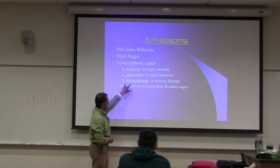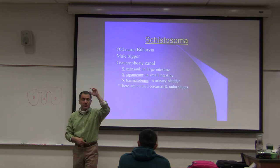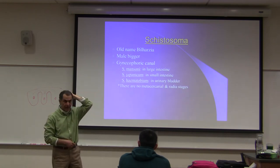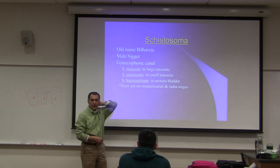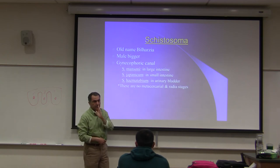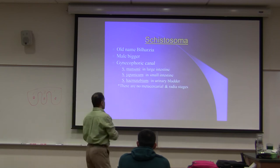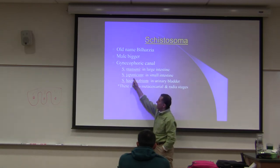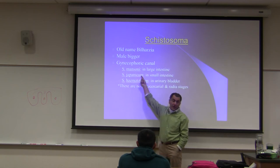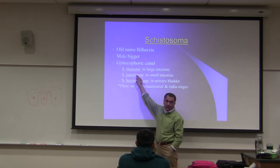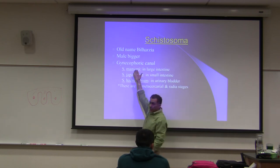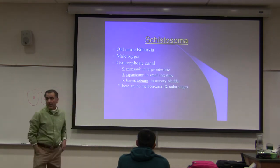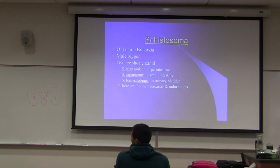Schistosoma haematobium is found in Asia and northern Africa. Mansoni and japonicum - Africa and Far East respectively, though both can be found in parts of Africa and Asia. That's how japonicum got its name. They are not in South America or Central America as far as I know.